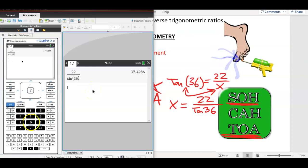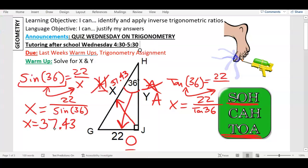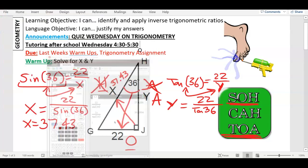And we can type that into our calculator, okay? 22, divide, tan, 36. Ta-da! We get 30.280, which is just 30.28. By the way, that's a Y, not an X, I should say.